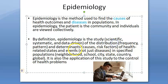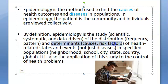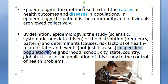Distribution means frequency and pattern — all that comes under distribution. Under determinants, they include the causes and risk factors — these are the ones that determine health. So determinants of health-related states or events in a specified population, and then you apply this study for the control of health problems.